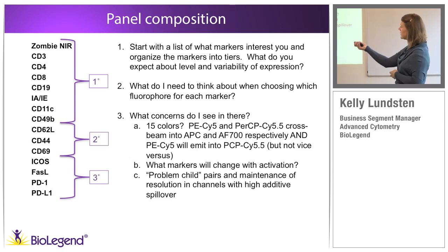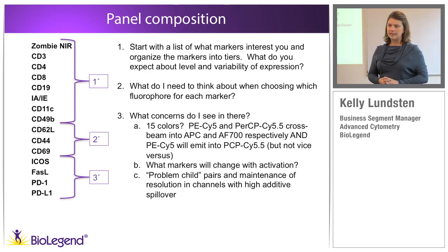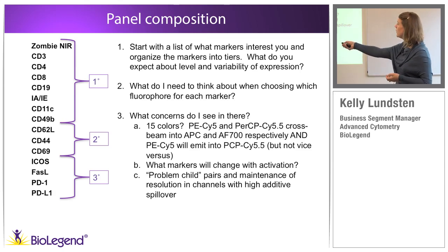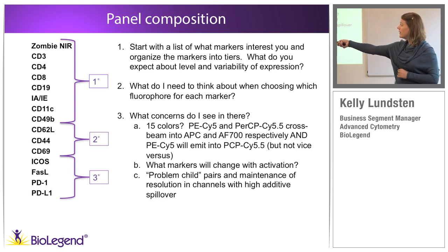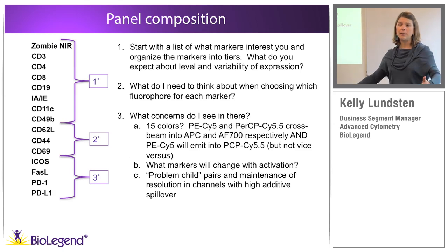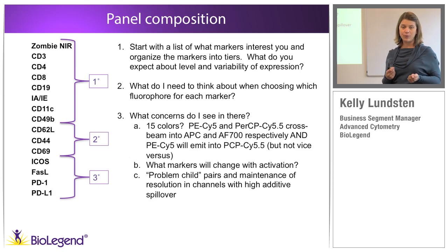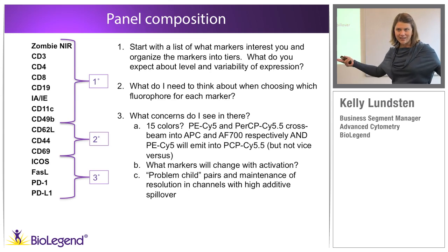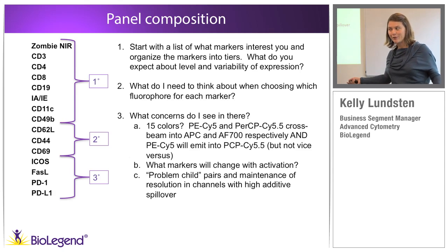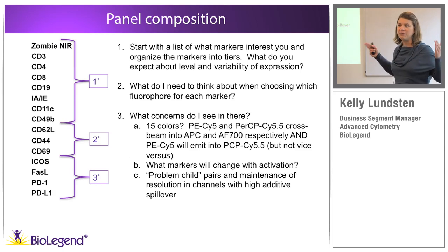I also have dynamic range markers that will change tremendously with activation — going from entirely negative to potentially off-scale. That will make a big difference for what those secondary molecules are conjugated to and how much background those fluorophores populate. If CD69 is not activated and it's on PerCP-Cy5.5, there won't be much background into Alexa 700. But the minute CD69 becomes activated, I'm detecting it with PerCP-Cy5.5 and putting a lot of background into Alexa 700. So dynamic range markers must be considered for their variable degree of background contribution.